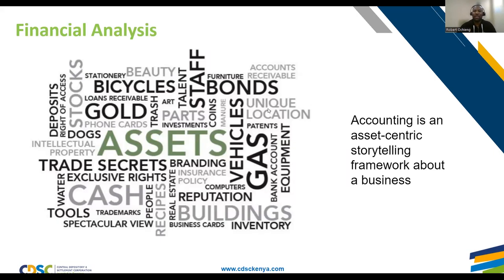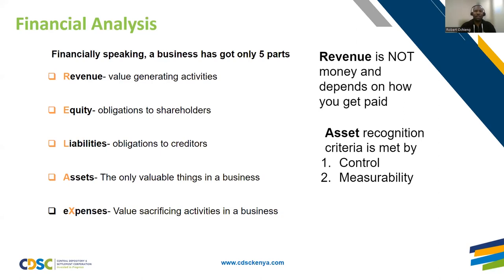Accounting will help us understand a business from certain groupings: assets, liabilities, equity, expenses, and revenue. Financially speaking, a business has only five things, simplified by the acronym RELAX — Revenue, Equity, Liabilities, Assets, and Expenses. Once you understand these five things, it becomes much easier to understand the story of a business.